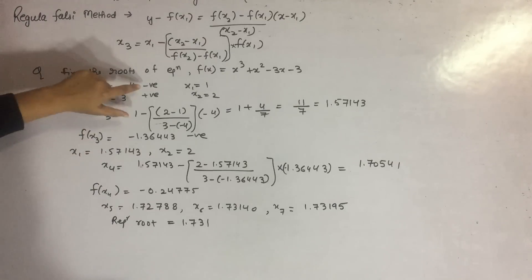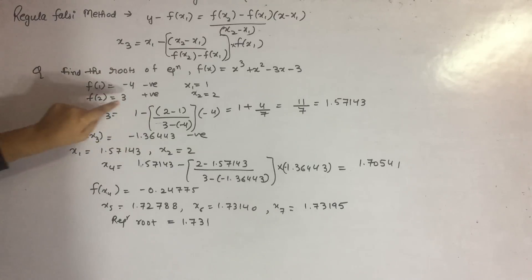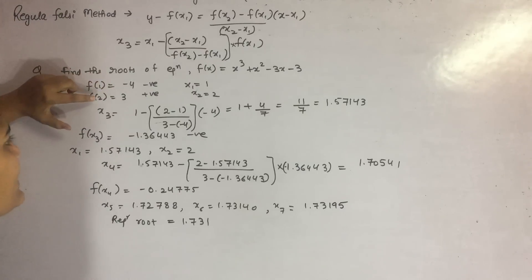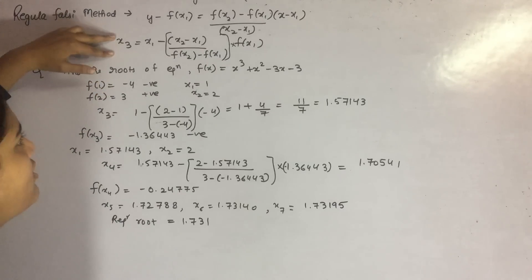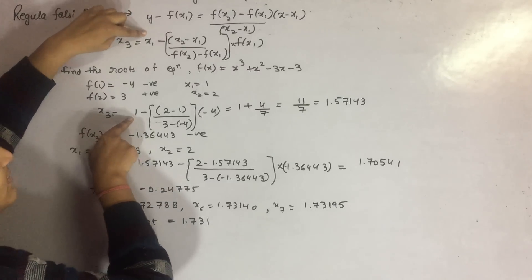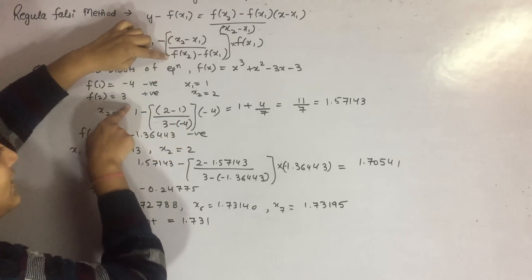So your x1 is 1 and your x2 is 2. Now you have to find the value x3. So x1 is 1 minus (x2 is 2 minus 1) divided by (f(x2) is 3, f(x1) is minus 4).